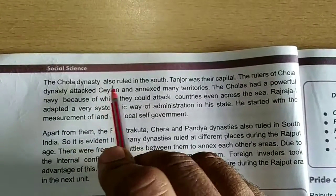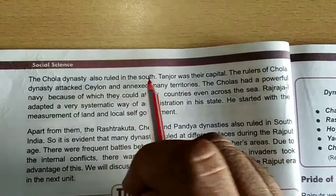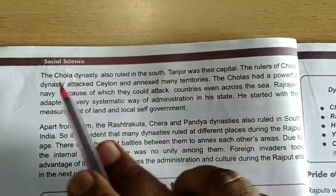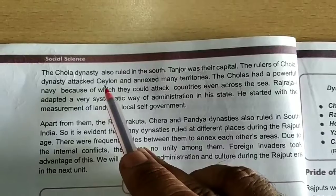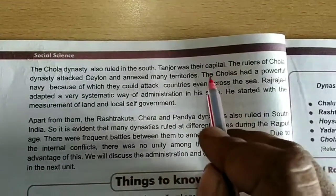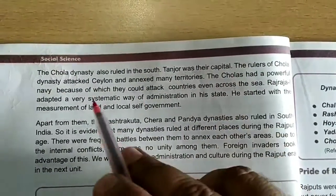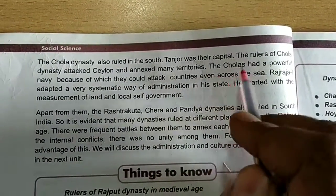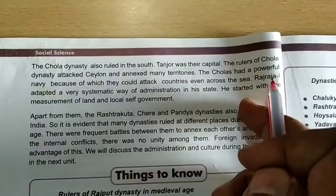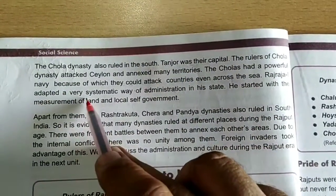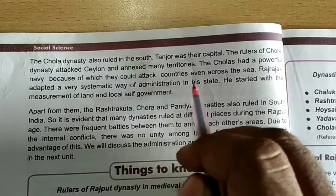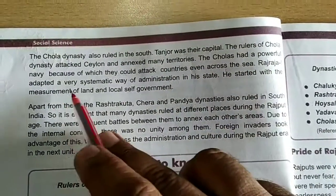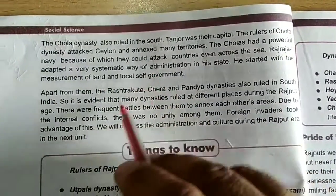The Chola dynasty also ruled in the South. Tanjore was their capital. The rulers of the Chola dynasty attacked Ceylon and annexed many territories. The Cholas had a powerful navy, because of which they could attack countries even across the sea. Raj Raja I adopted a very systematic way of administration, starting with the measurement of land and local self-government.